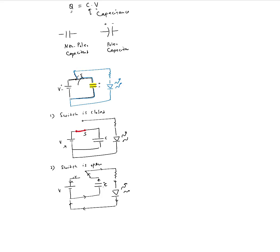You can imagine the applications for something like this — for example, the flash in a digital camera. The flash typically needs a burst of very high current. Batteries, because of their internal chemistry, have large internal resistance and cannot supply the kind of current a flash unit needs. So the battery charges the capacitor, and then the capacitor dumps all that charge almost instantaneously across the flash, lighting it up.